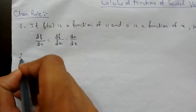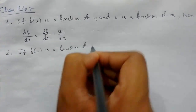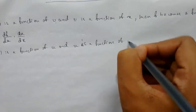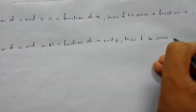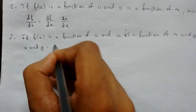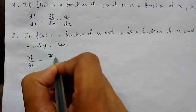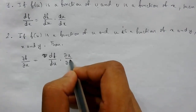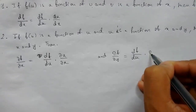Our second rule: if f(u) is a function of u, and u is a function of both x and y, then f becomes a function of x and y. We can say that the partial derivative ∂f/∂x equals (df/du) times (∂u/∂x) — normal derivative times partial derivative. And for y: ∂f/∂y equals (df/du) times (∂u/∂y).